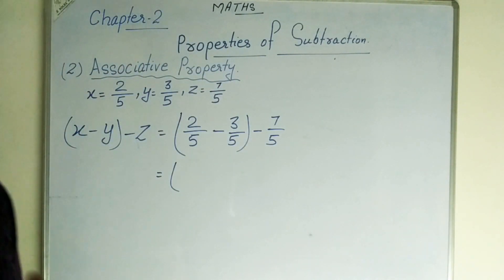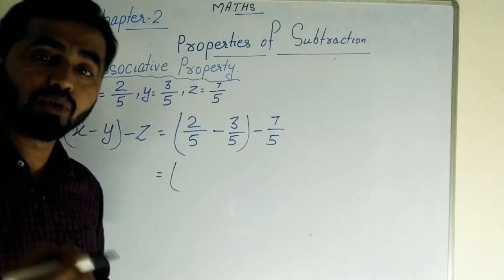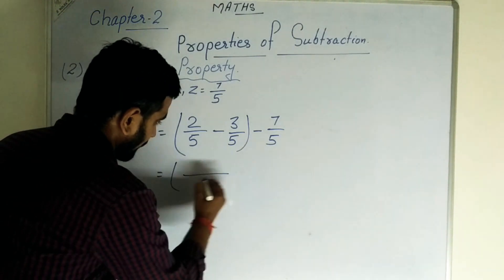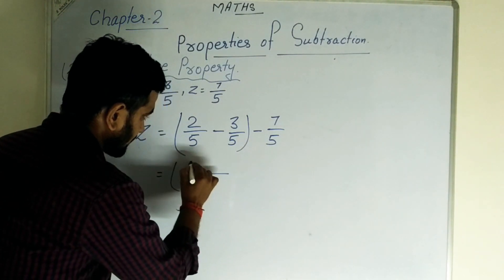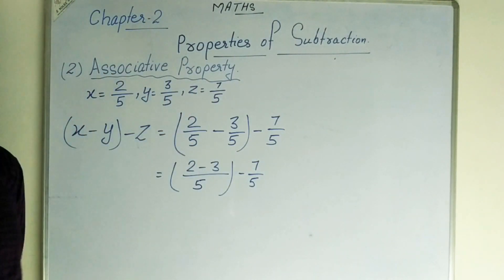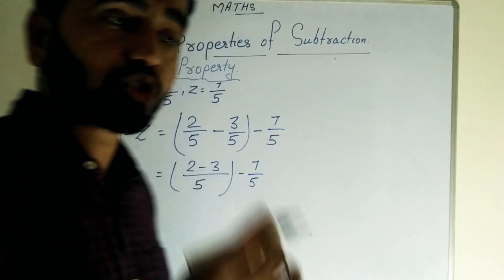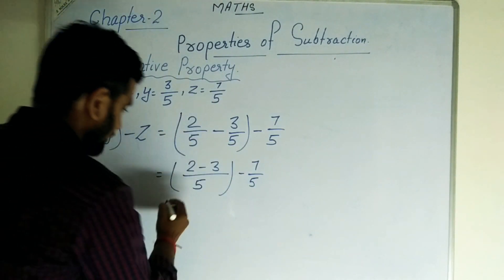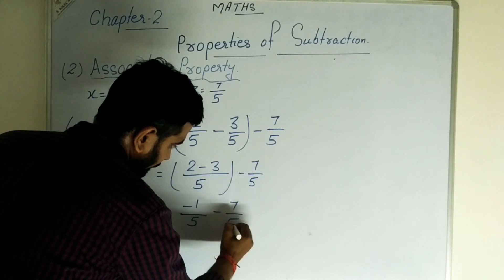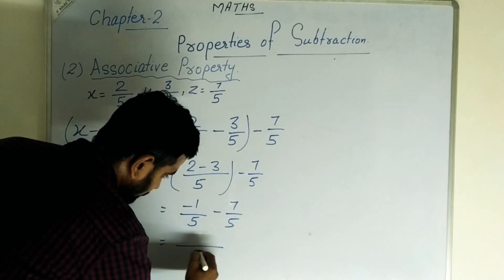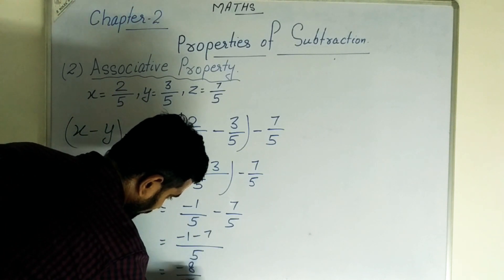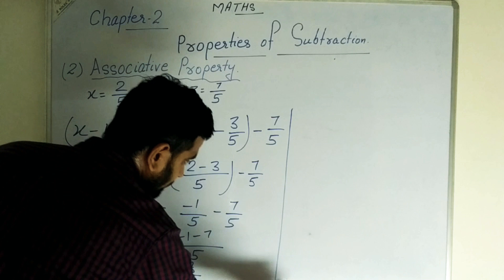Use the bracket and solve it first. The denominators are already the same. 2 minus 3 equals minus 1 by 5. Then minus 7 by 5. Denominators are the same, so minus 1 minus 7 gives us minus 8 by 5.